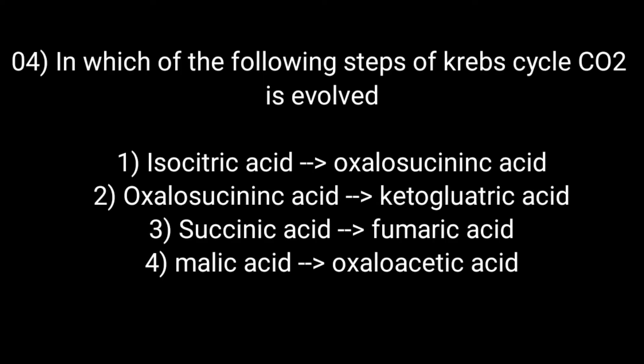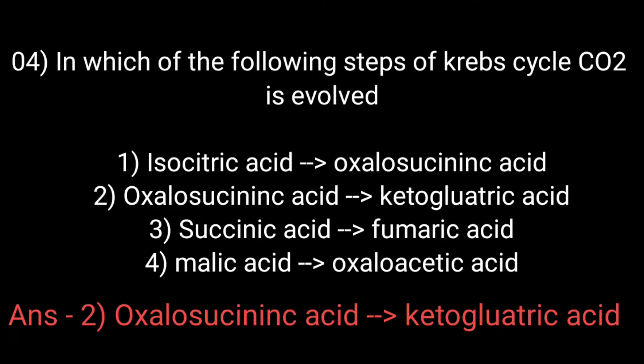In which of the following steps of the Krebs cycle is CO2 evolved? Option number first: isocitric acid to oxalosuccinic acid. Option number second: oxalosuccinic acid to ketoglutaric acid. Option number third: succinic acid to fumaric acid. And option number fourth: malic acid to oxalosuccinic acid. The correct answer is option number second: oxalosuccinic acid to ketoglutaric acid.